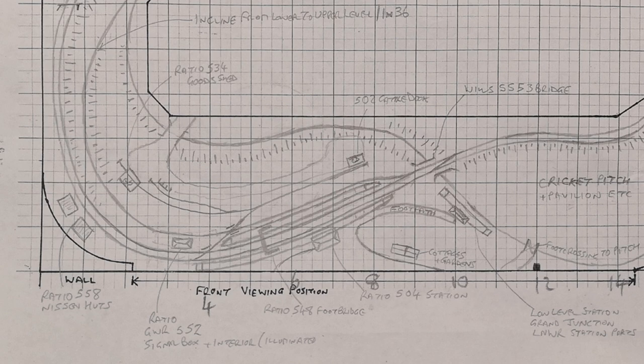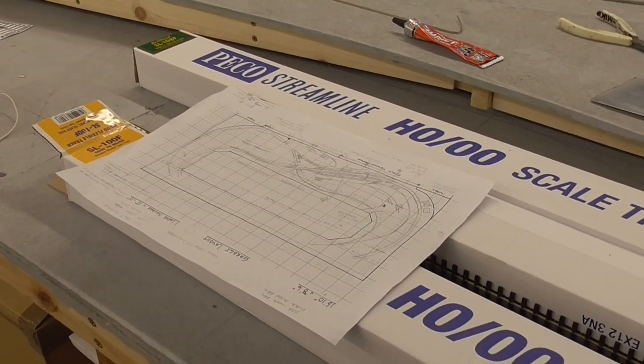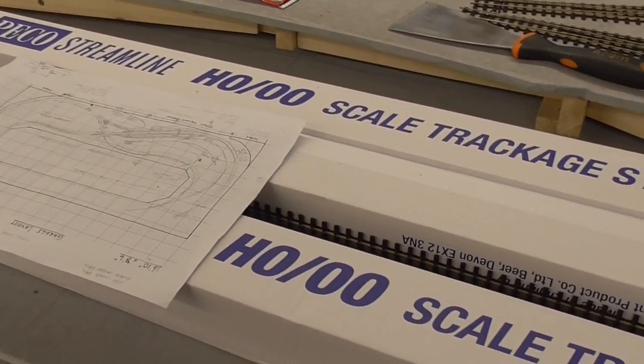Scenes will include a cricket pitch, dairy and goods yard with a GWR country station constructed from a number of ratio kits forming the centerpiece, while the track work will consist of Pico's all-new Code 75 ball head.